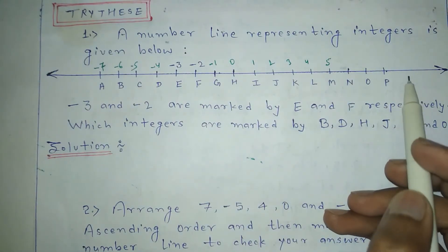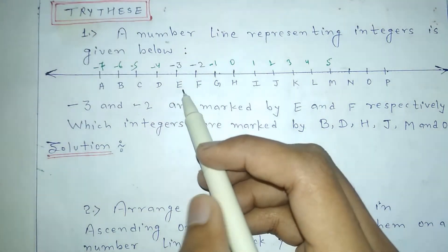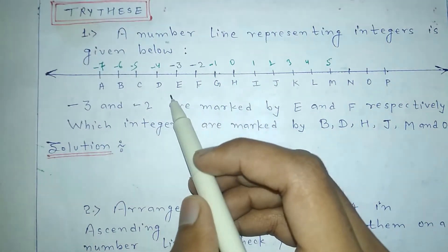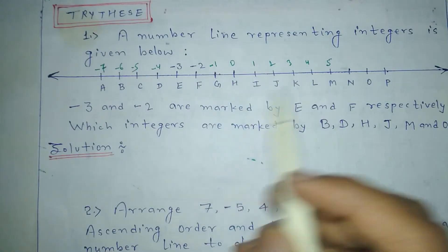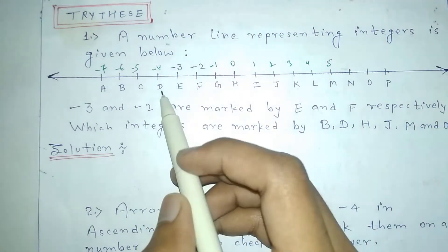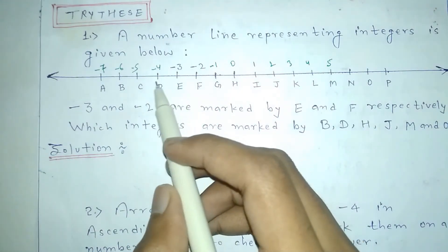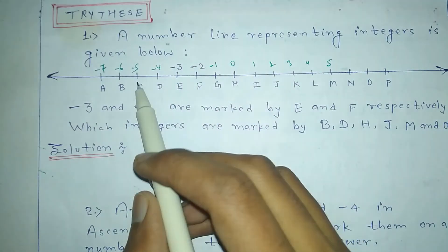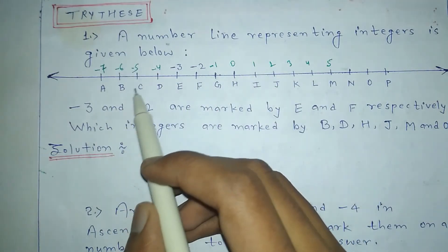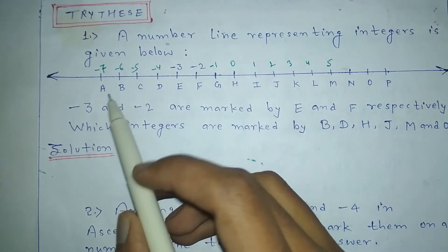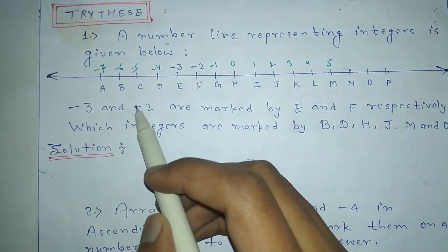After P on the right side, the numbers continue infinitely. Similarly, on the left side from E, the values continue: -3, -4, -5, and so on, going infinitely toward negative infinity.